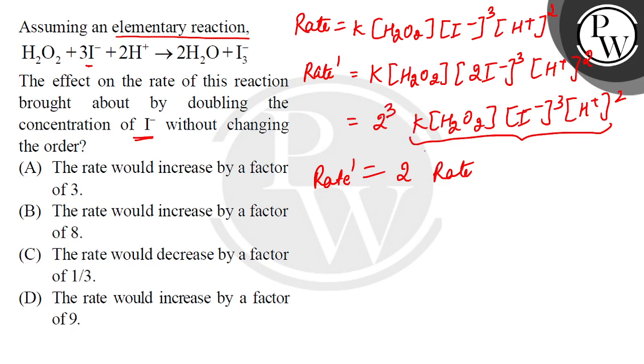So that is what happens. Rate dash is equals to 8 times of rate. The new rate of the reaction would be 8 times of the initial rate.